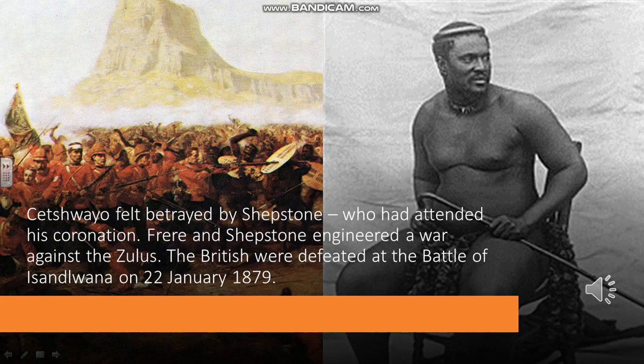In an attempt to justify a war against the Zulus, Shepstone and Frere organised a boundary commission to look at whether the Zulus had encroached into the Transvaal, but the boundary commission found they hadn't. If anything, it had been the Boers who had encroached on Zulu territories. Nevertheless, an ultimatum was presented to Cetshwayo that he had to disarm his army, and he wasn't going to do this.